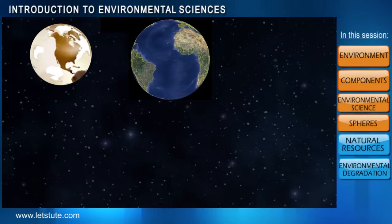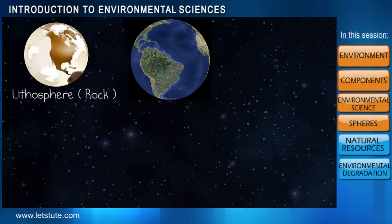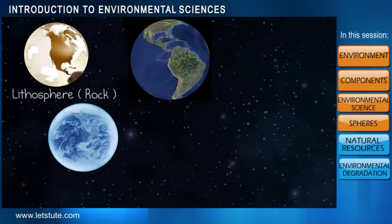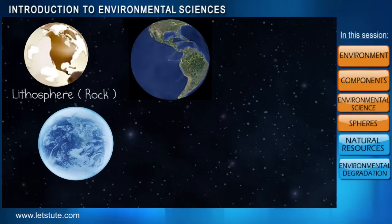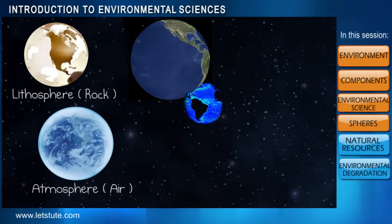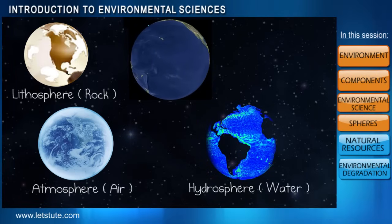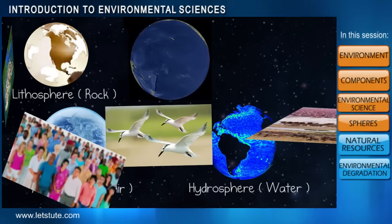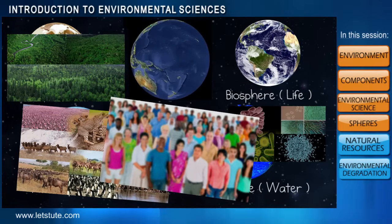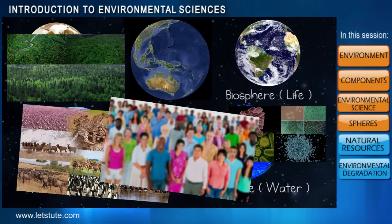If we take the entire land surface on Earth and club it together, we get a separate sphere called the lithosphere. Similarly, the air surrounding our Earth's surface forms a sphere called the atmosphere. The bluish part on a globe, which indicates the water surface, forms another sphere called the hydrosphere. And the various life forms on Earth — plants, animals, microorganisms, and humans — are part of another sphere called the biosphere.